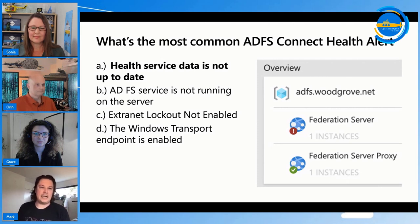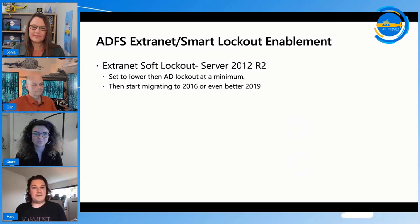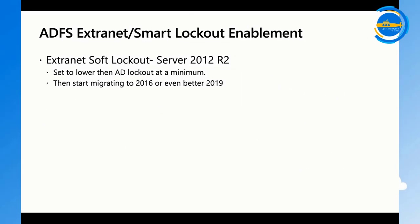On ADFS 2012 R2, you have extranet soft lockout. It stops authenticating the user against Active Directory once you've hit the threshold. Set your soft lockout on ADFS to about half of your Active Directory lockout value — if AD lockout is 10, set ADFS to around five or six. This prevents ADFS from passing bad password attempts back to Active Directory and locking out the account.